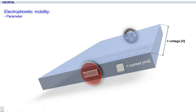Electrophoresis is the migration and separation of charged molecules in an electric field. The two important parameters are current and voltage. With a larger section of the gel, the current is split among more ions, so the current must be set higher. Like lightning in nature, voltage must get higher to reach and influence distant ions. To summarize, voltage is a parameter of the migration length.